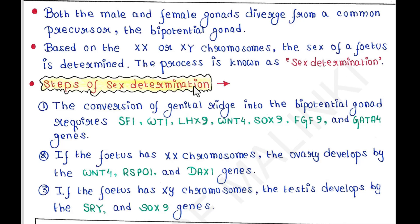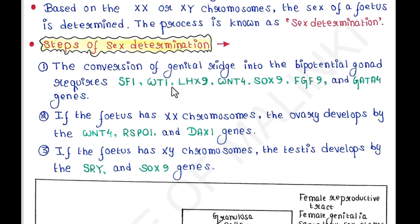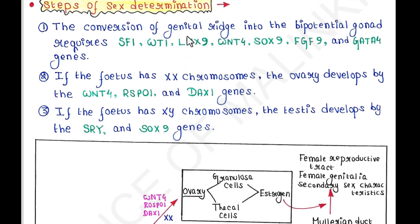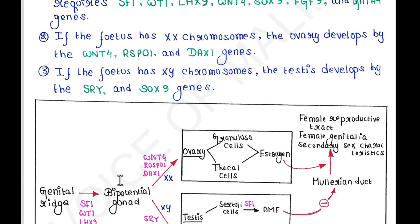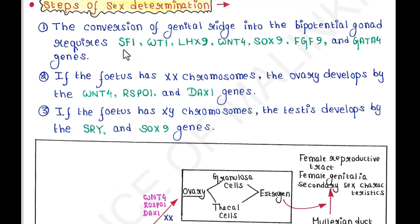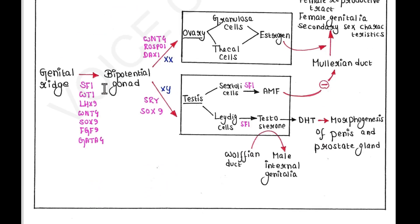Let's see the steps of sex determination. The conversion of genital ridge into the bipotential gonad requires SF1, WT1, LHX9, WNT4, SOX9, FGF9, and GATA4 genes.